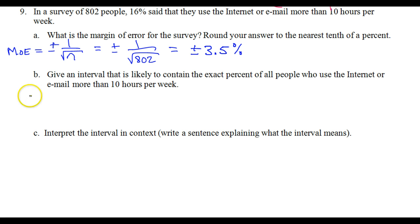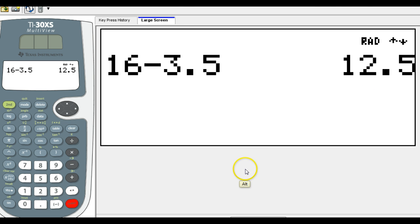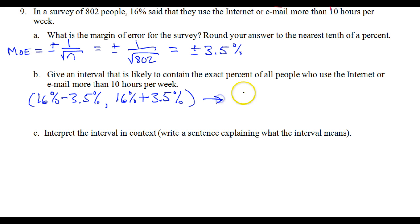The bottom end of this interval is going to be the 16% minus 3.5%, that will give us the low end. The upper end is going to be 16% plus 3.5%, that's going to give us the interval. So 16 minus 3.5, we're talking about 12.5%.